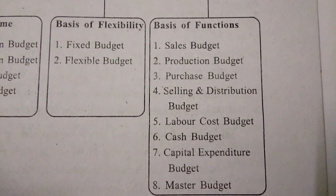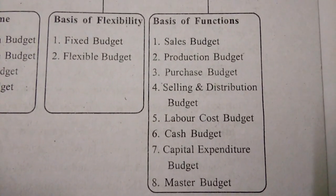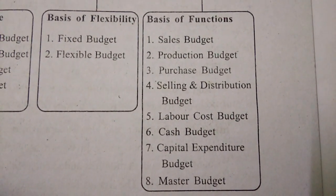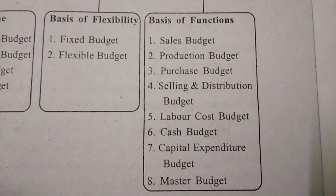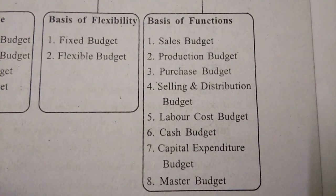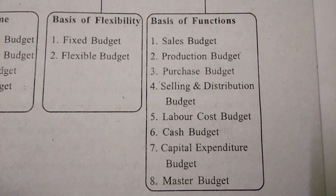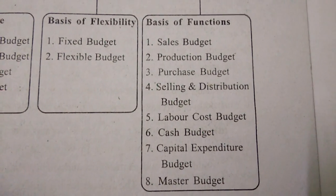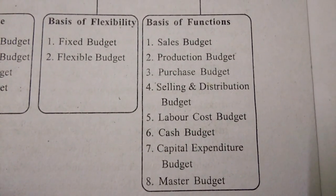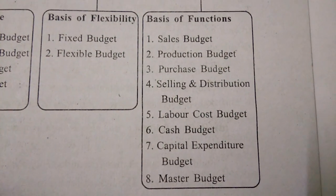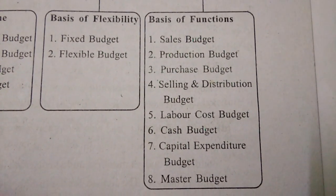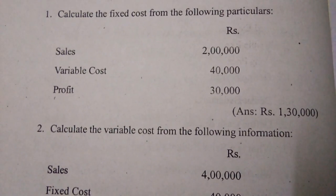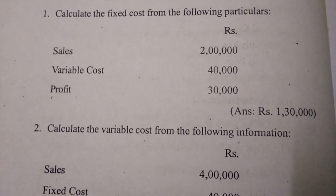Basis of functions: first, sales budget; second, production budget; third, purchase budget; fourth, selling and distribution budget; fifth, labor cost budget; sixth, cash budget; seventh, capital expenditure budget; and finally eighth, master budget. Again giving short questions for the purpose of practice.